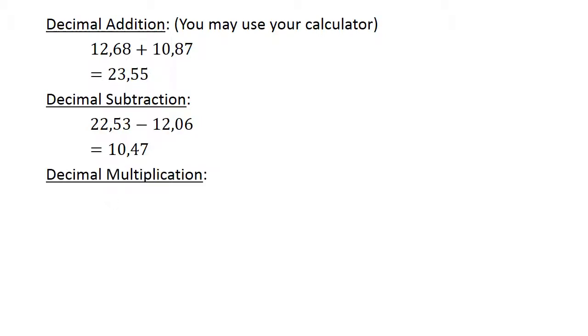Decimal multiplication. 0.84 times 0.08 equals 0.0672.